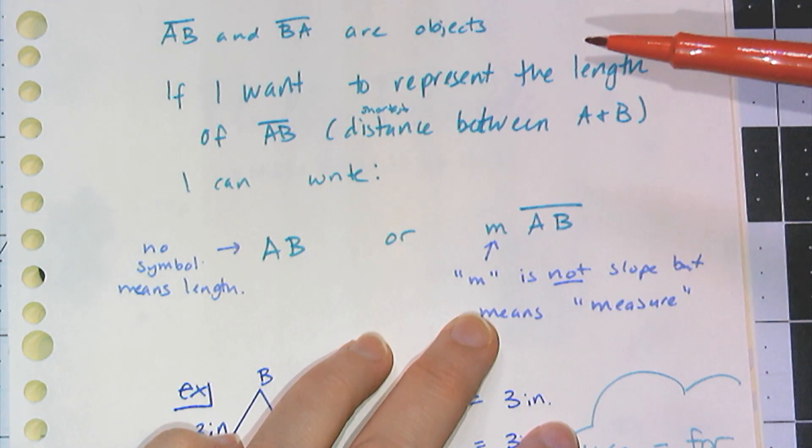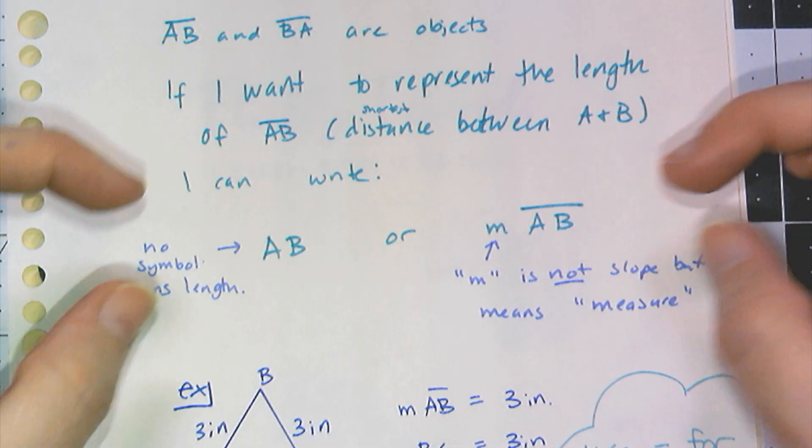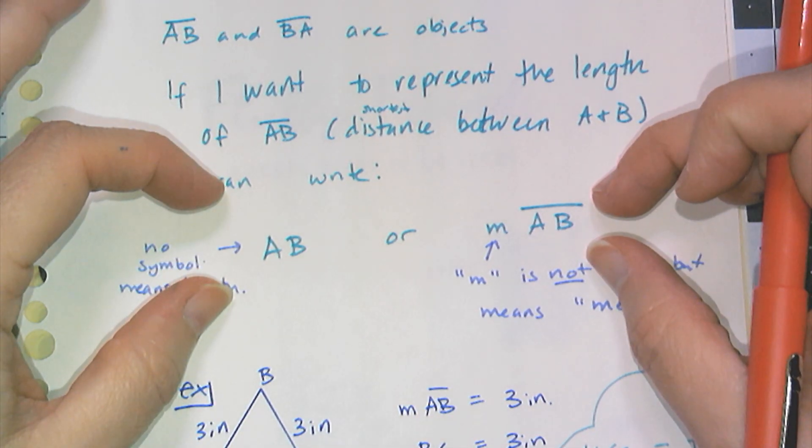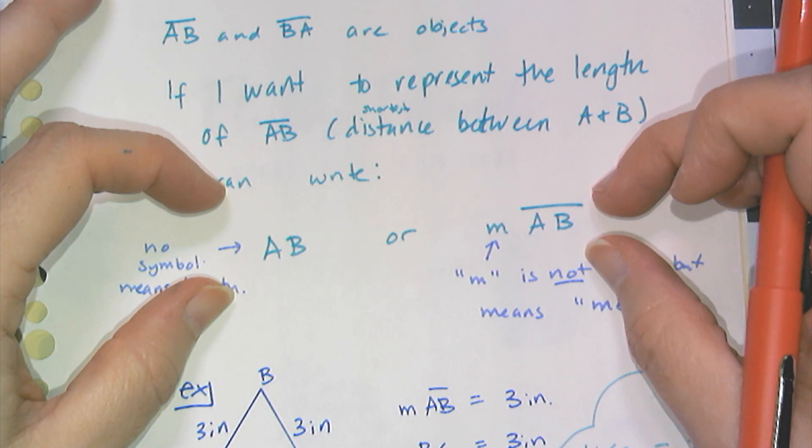In the case of a line segment, that means the length of the line segment. These two symbolically represent numbers. They no longer represent the object, the line segment. They represent a quantity. That's important because of the way I write things.